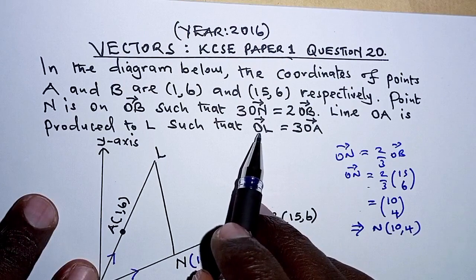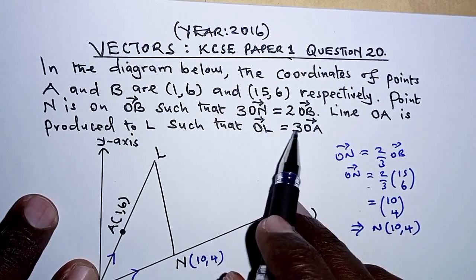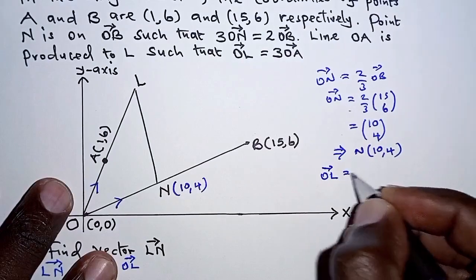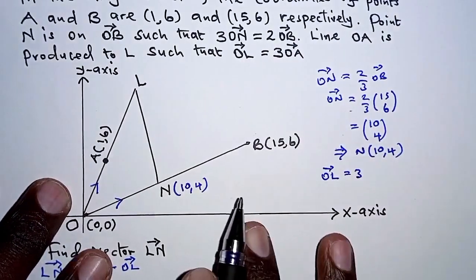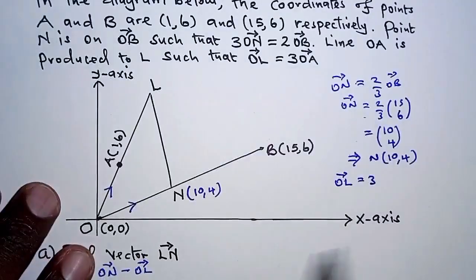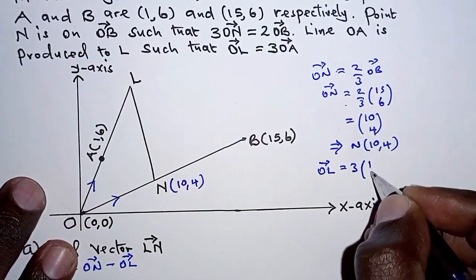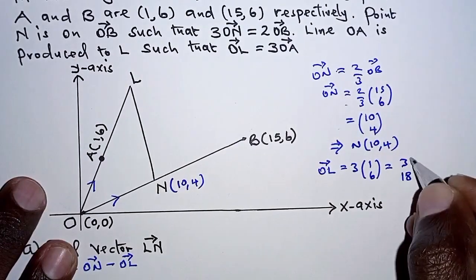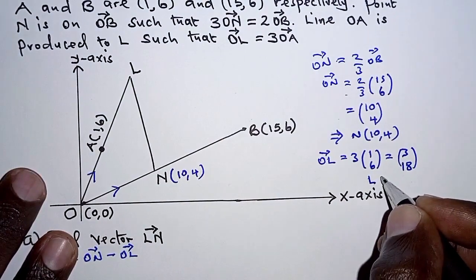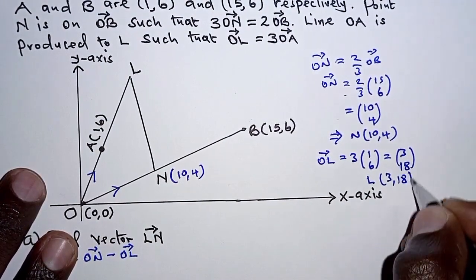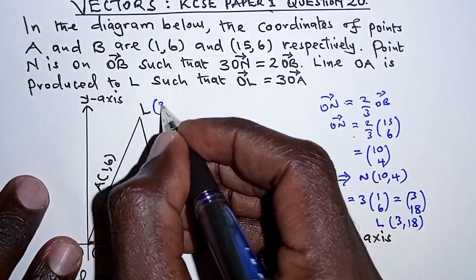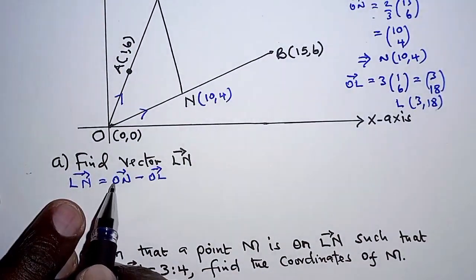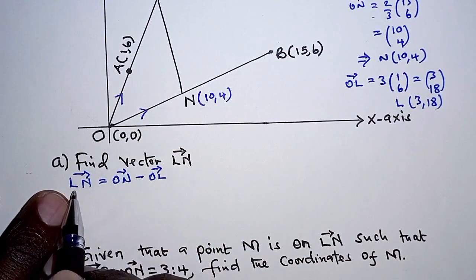We can apply the same procedure to determine L. We already have OL given as 3OA, so OL equals 3OA. Using the coordinates, OA as a vector is (1, 6). That means OL becomes 3 times (1, 6), which gives (3, 18). So L is at coordinates (3, 18).